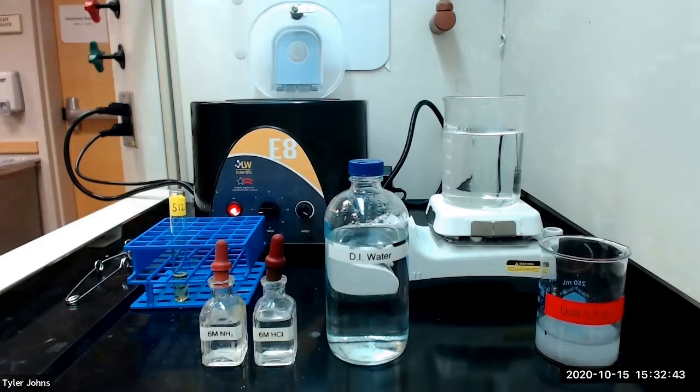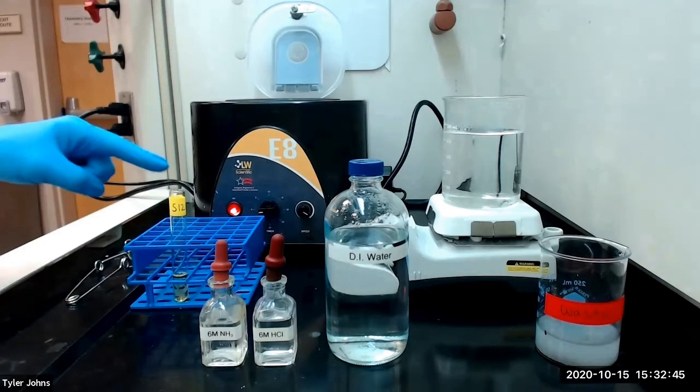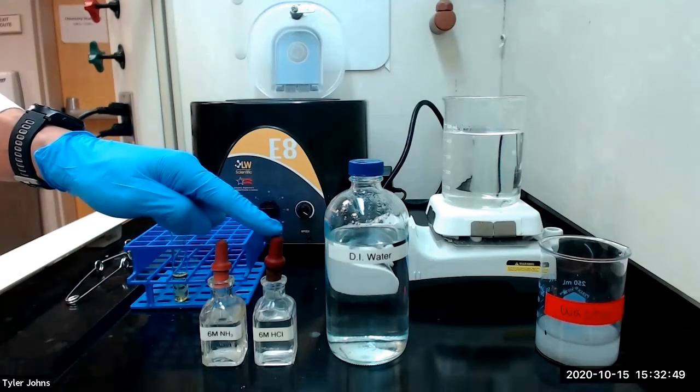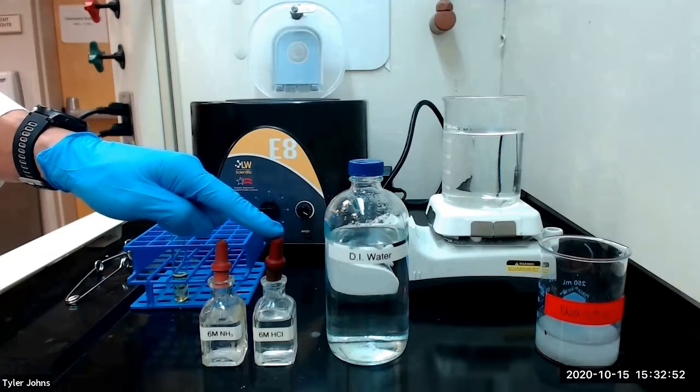We will now perform the test for aluminum ion. We will acidify solution S12 with the addition of six molar hydrochloric acid and add five drops in excess.